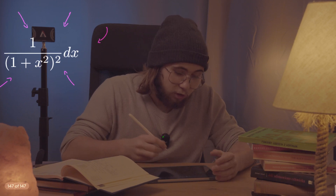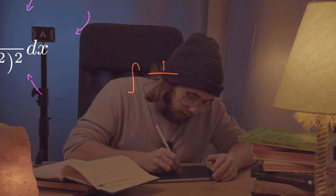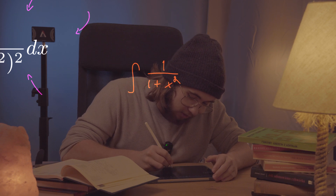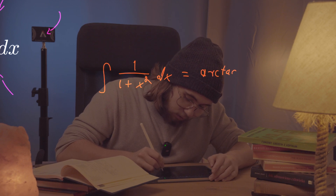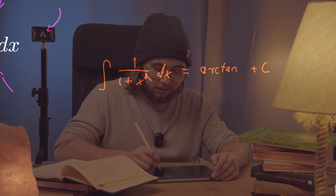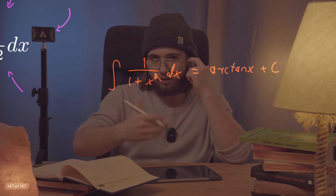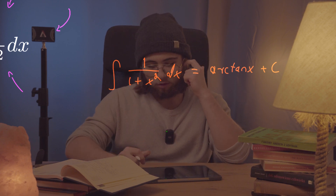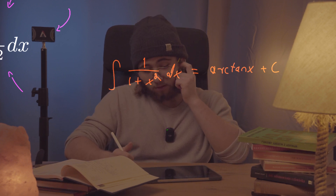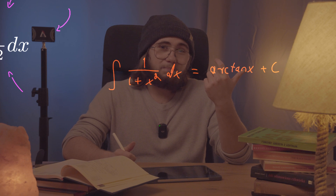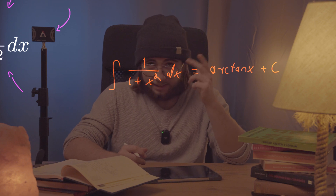We probably should know from Calc 2 that the integral of 1 over (1 plus x squared) dx is equal to the arctangent — the inverse tangent of x — plus C. You could achieve it by simply substituting tangent of x equal to u, but it's just a bit boring. There's also another pretty nice identity.